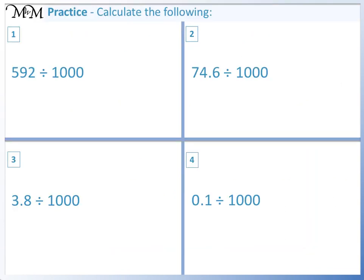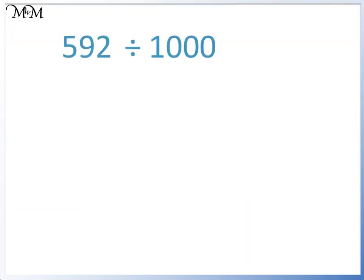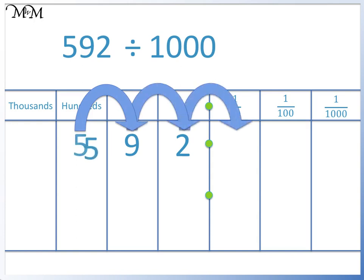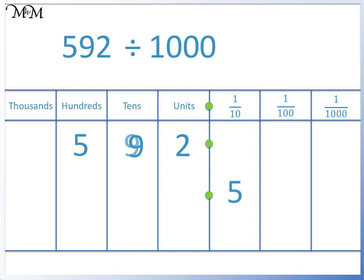Here are some questions for you to try. Pause the video now and have a go. Question 1: 592 divided by 1000. We start with the 5 and move it three places to the right: 1, 2, 3. The other two digits will then follow. We write in our zero and we have our answer. 592 divided by 1000 equals 0.592.